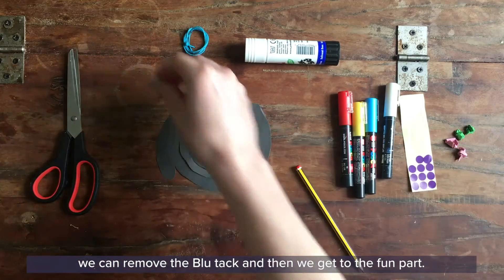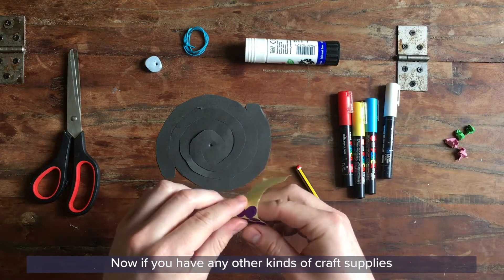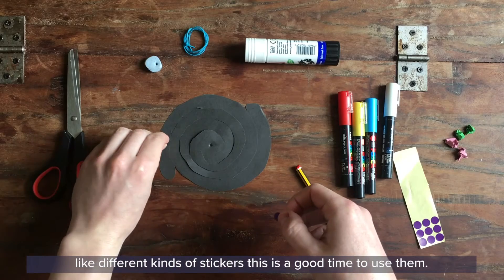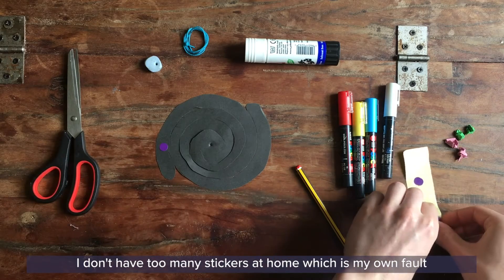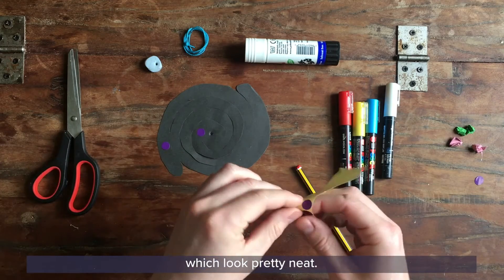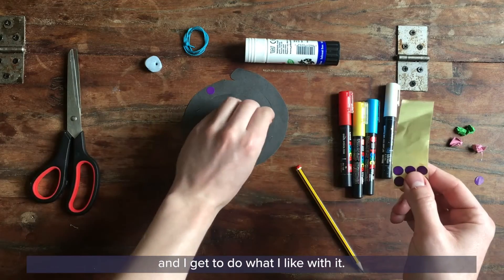Once you've got a sizable hole in it we can remove the blue tack. And then we get to the fun part. This is when we get to decorate our galaxy. Now if you have any other kinds of craft supplies like different kinds of stickers this is a good time to use them. I don't have too many stickers at home which is my own fault. But I'm going to add some purple stars to my galaxy first of all which look pretty neat. Purple stars don't actually exist but this is my galaxy and I get to do what I like with it.